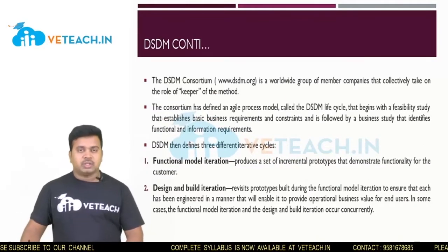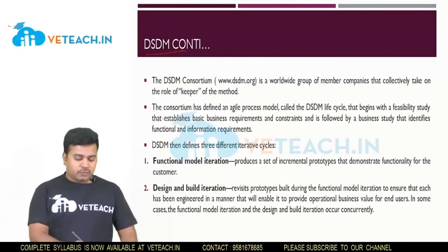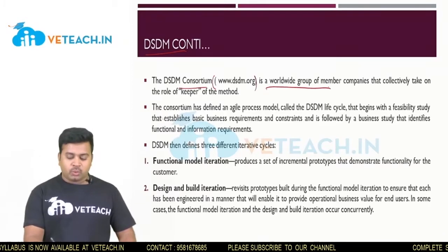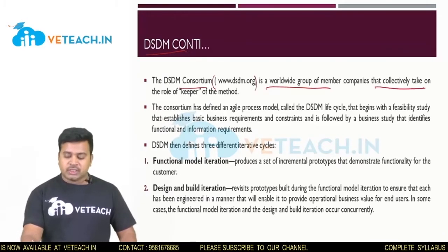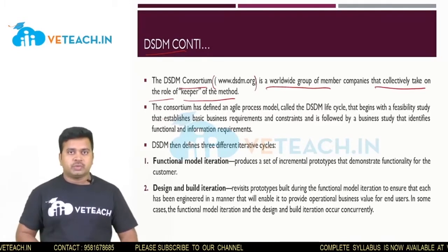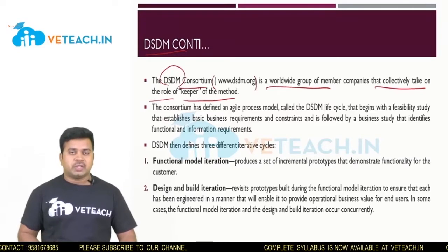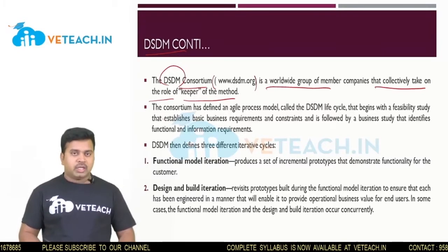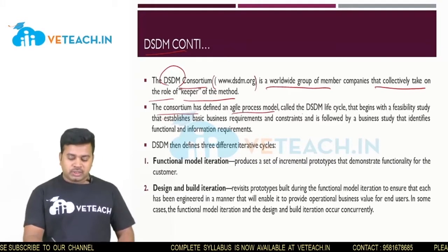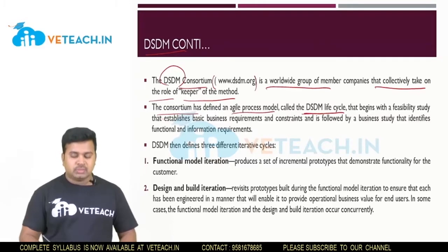The most important aspect of the DSDM method is that it follows a consortium — a worldwide group of member companies that collectively take on the role of keeper of the method. This consortium has defined an agile process model called the DSDM life cycle, which provides a new life cycle for software development.